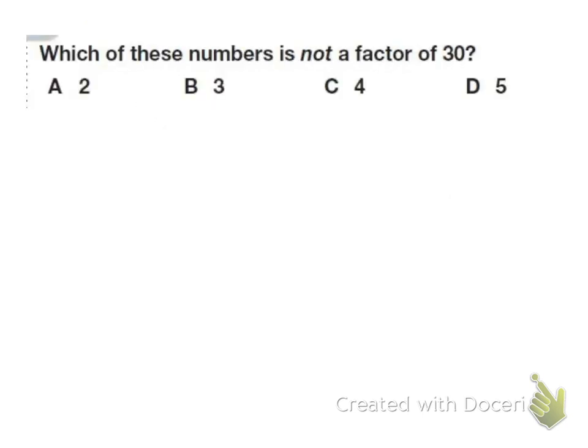Now sometimes we can discover factors of a number just by looking at 1 or 2 of its digits. For example, a factor of every even number is 2. Any whole number ending in a 0 or a 5 has 5 as a factor.